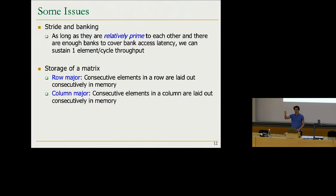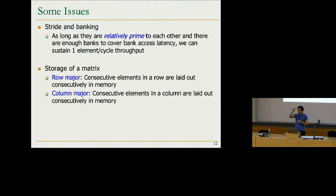Memories are linear, so when we access memory we use specific linear addresses. When we store a two-dimensional data structure like a matrix, there are two possibilities: row major and column major. In row major we store the matrix row by row—first row, then second row, and so on. In column major we store by columns. This depends on the computing system and programming language. C typically uses row major layout, while Fortran uses column major.